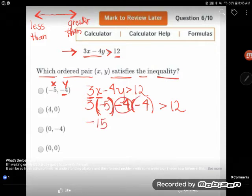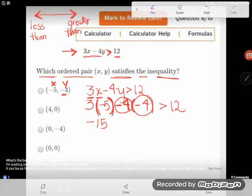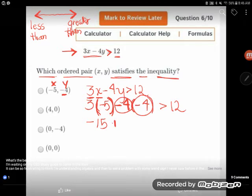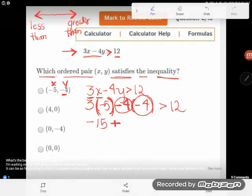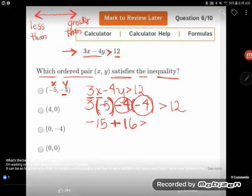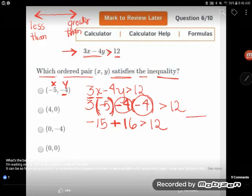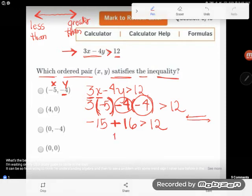And negative 4 times negative 4. I'm going to keep their signs with them when I multiply. A negative times a negative is a positive. And so I'm going to end up with a plus. And 4 times 4 is 16. And I want to know if that's greater than 12. OK, so negative 15 plus 16. If I went 15 in the negative direction and 16 in the positive direction, I would end up at 1.